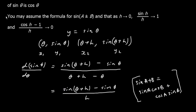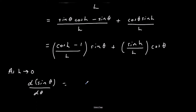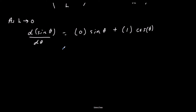As h approaches 0, d(sine theta)/d theta equals: (cos h − 1)/h goes to 0, so we get 0 times sine theta; and sine h/h goes to 1, so we get 1 times cos theta. Therefore, 0 times sine theta plus 1 times cos theta equals cos theta.